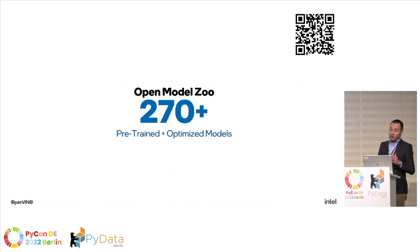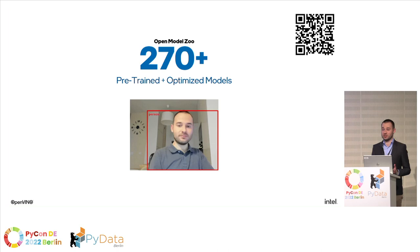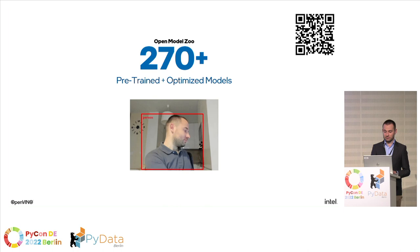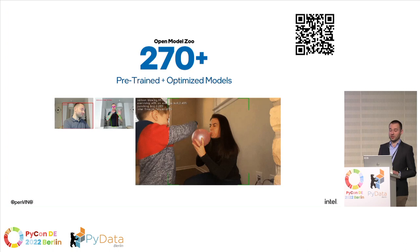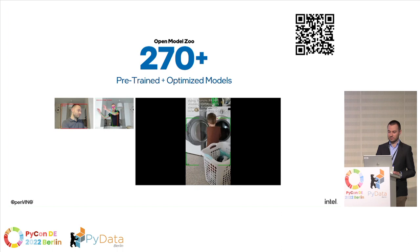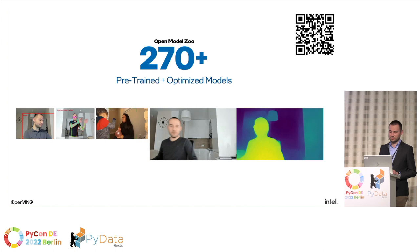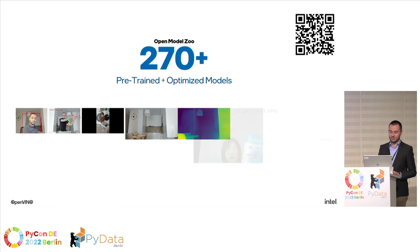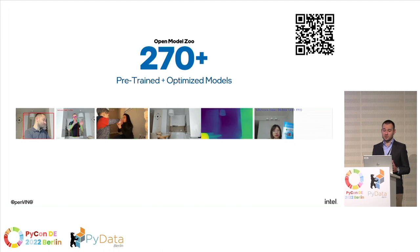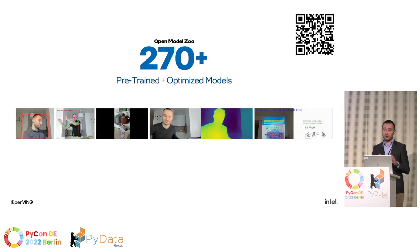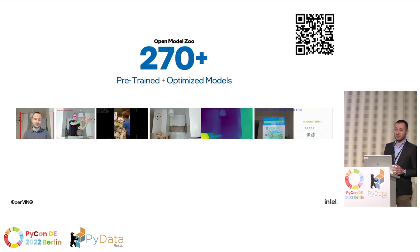We share more than 270 pre-trained and optimized models, including object detection, pose estimation, action recognition, monocular depth estimation, OCR supporting languages like Chinese, and many more. All are available on our GitHub repository via OpenModelZoo. Scan the QR code to access them. If you're just starting your deep learning journey and don't have your own trained model, you can use one of ours.